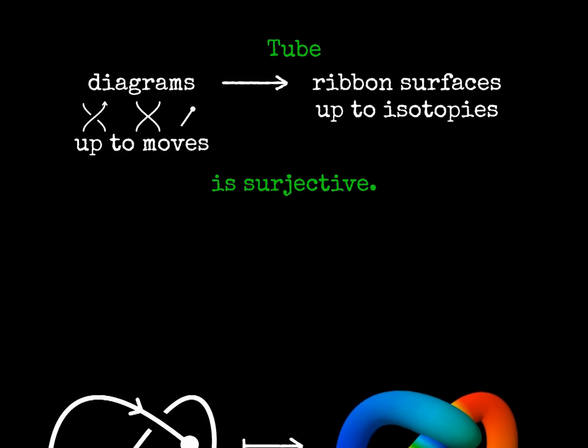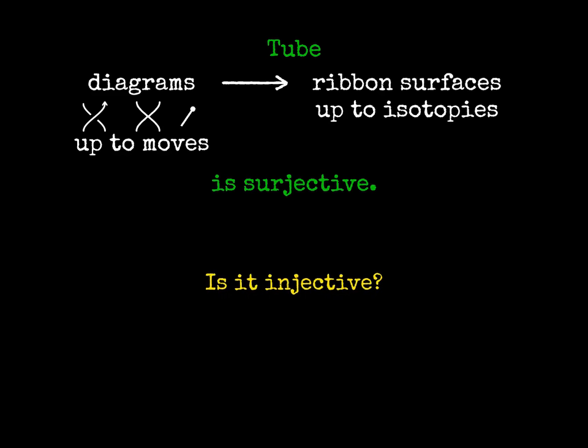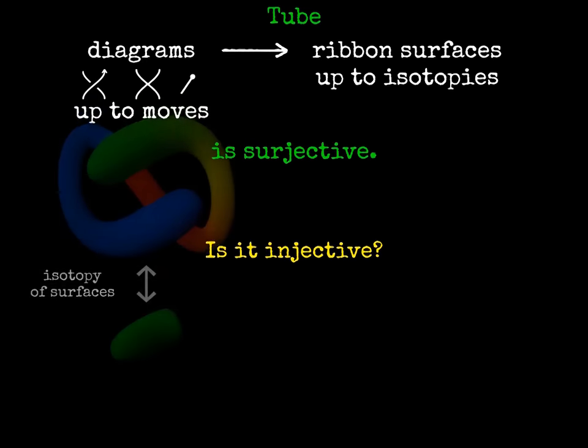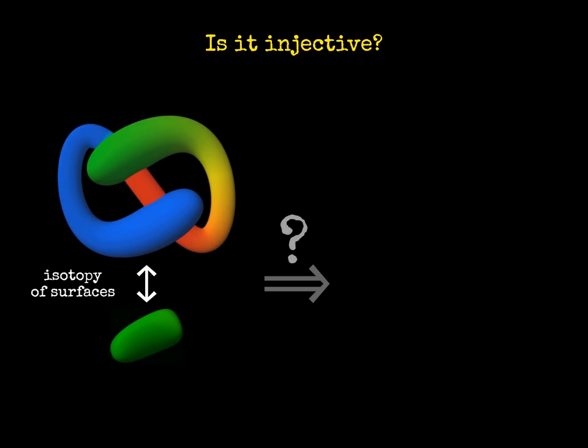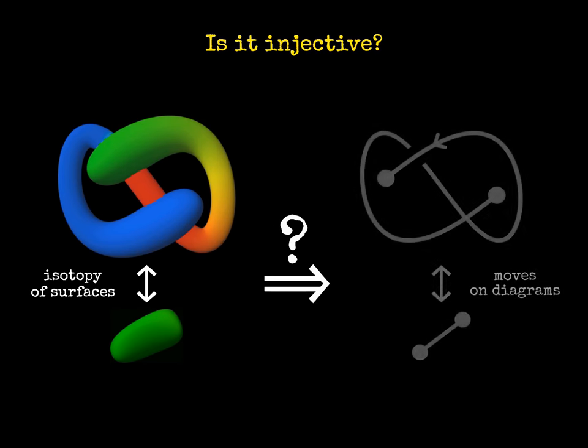It is still unknown whether this function is injective, that is, whether each 4 dimensional movement of ribbon surfaces can be represented by a sequence of the moves on diagrams. No proof has been found yet that this is true, but also no counterexample to show that this is false.